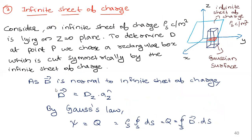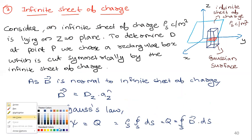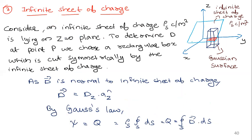Now for an infinite sheet of charge. Consider an infinite sheet with surface charge density rho-s coulombs per meter squared lying on the z equals zero plane (the x-y plane). We need to determine D at point P. A rectangular box Gaussian surface is cut symmetrically by the infinite sheet of charge. Since the electric flux density is normal to the infinite sheet of charge, D equals D_z into a-hat-z — the direction of D is along the z-axis.